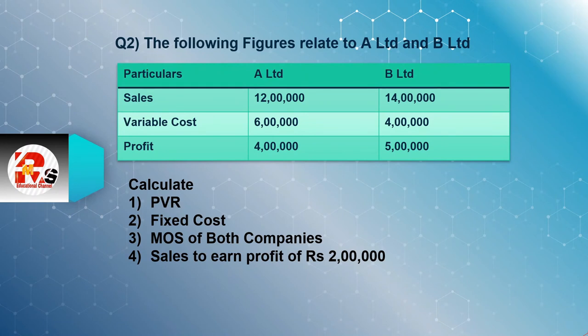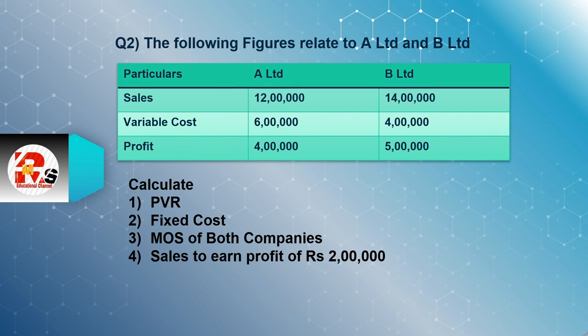Question number 2 involves two companies, so PVR and other values need to be solved twice. The intention of this question is that when two different companies are given — unlike two years/periods — we use the PVR formula: contribution divided by sales multiplied by 100. The two-year change formula is not applicable here. This is an important point; do not make silly mistakes.